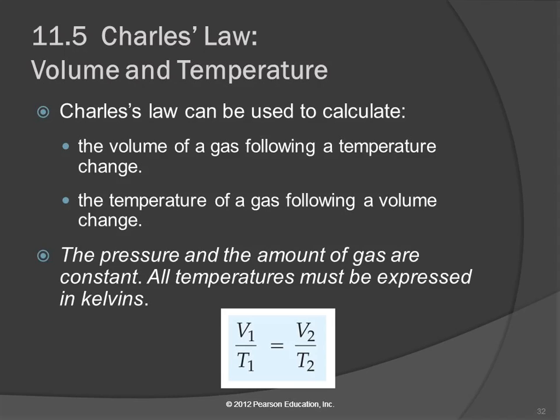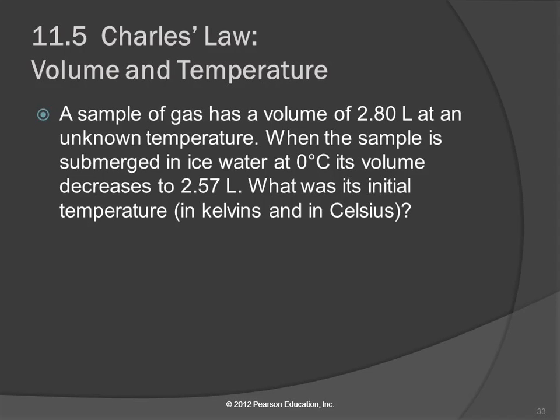So we can use Charles' law to calculate changes in volume and temperature. And so this is how we state the equation. V1 over T1 equals V2 over T2. And again, really important, got to use Kelvins. Won't work if you use Celsius. And that's a common mistake that students make. They forget to convert. Let's do an example. A sample of gas has a volume of 2.80 liters at an unknown temperature. When the sample is submerged in ice water at zero degrees Celsius, its volume decreases to 2.57 liters. What was its initial temperature? And they want to know in Kelvins and in Celsius.